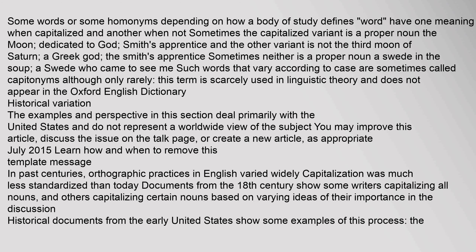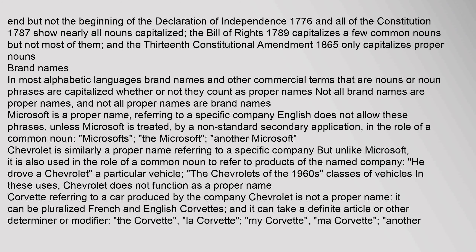In past centuries, orthographic practices in English varied widely, and capitalization was much less standardized than today. Documents from the 18th century show some writers capitalizing all nouns, and others capitalizing certain nouns based on varying ideas of their importance. Historical documents from the early United States show some examples of this process: the end but not the beginning of the Declaration of Independence (1776) and all of the Constitution (1787) show nearly all nouns capitalized. The Bill of Rights (1789) capitalizes a few common nouns but not most of them, and the 13th Constitutional Amendment (1865) only capitalizes proper nouns.